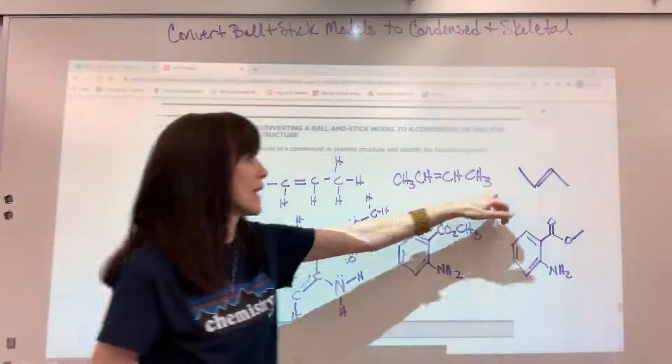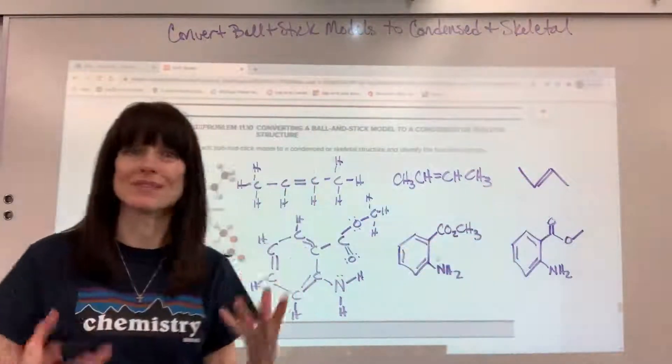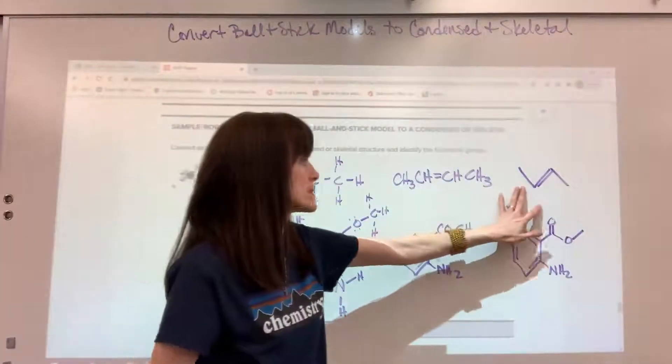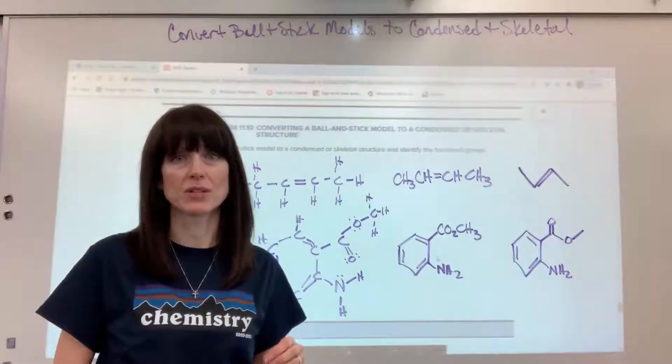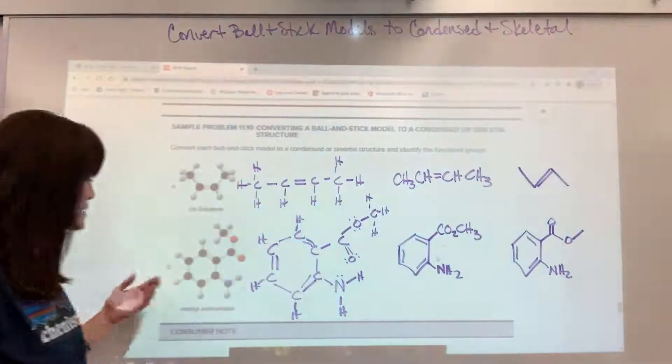When a line is blank at the very end, that simply means that there's a carbon. And recall on the skeletal that we know there are enough hydrogens to give every carbon a total of four bonds. Let's look at this one.